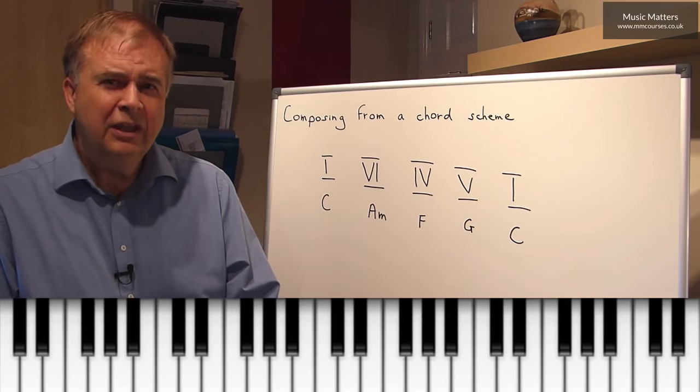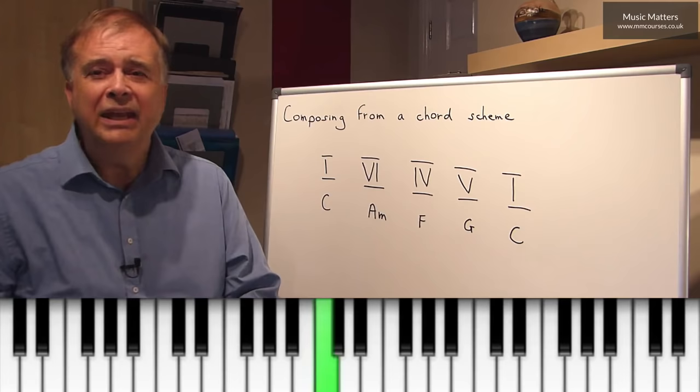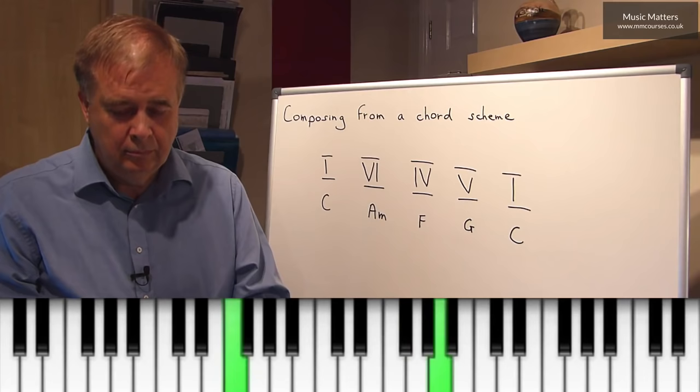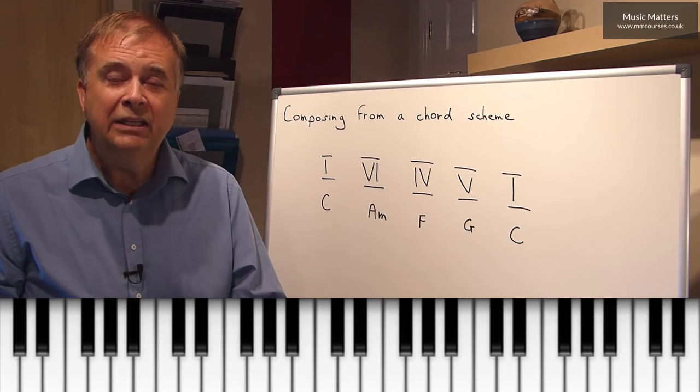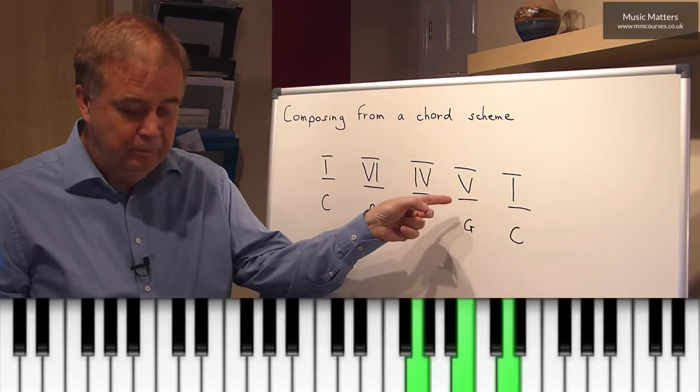Now in the example that we started with, all I was doing there was using these chords as my bass line. So I had C, A, F, G, C. And that's what we're going to do for the time being, because obviously those are the bottom notes of those chords. Now when I played this, all I was doing was taking the chord, the basic triad, in my right hand. So there's I, VI, IV, V, back to I.